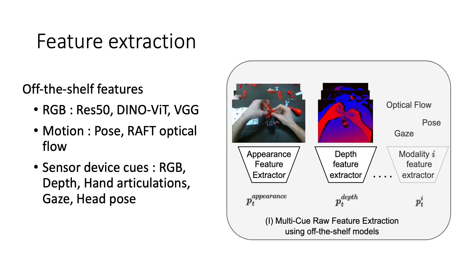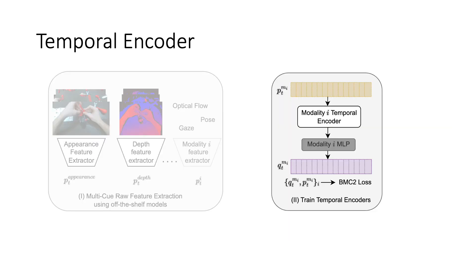The first step in our pipeline involves extracting what we call raw features. These could be any off-the-shelf feature extractors like ResNet, ViTs, or motion encoders from RAFT, or even on-device modalities like gaze, head pose, hand articulation, etc. The idea of adapting pre-extracted off-the-shelf features enables us to effectively leverage SSL on extremely small datasets. Note that in our setup, this is an offline process.